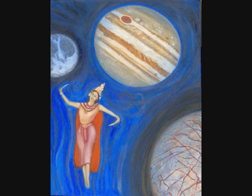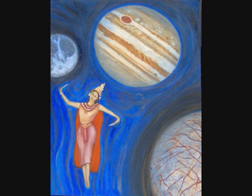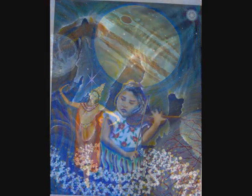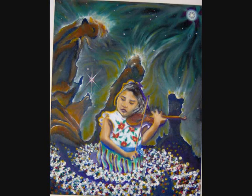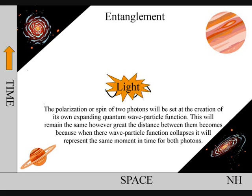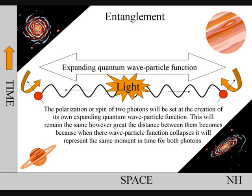However insane this theory might sound, it can explain the paradoxes and weirdness of quantum mechanics. We have entanglement because light moves through space, but not time, as a wave-particle function. The polarization of two photons will be set at the creation of its own expanding quantum particle wave function. This will remain the same, however great the distance between them becomes, because when their wave-particle function collapses, it will represent the same moment in time for both photons.